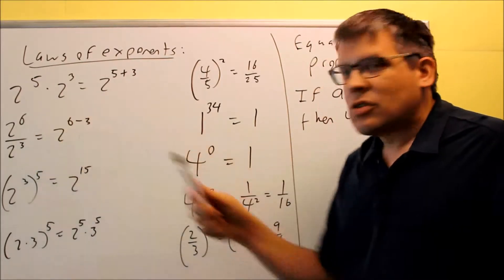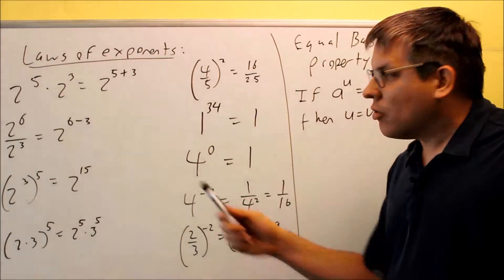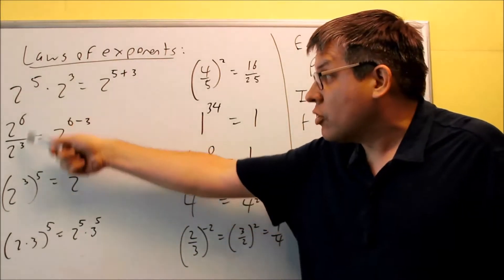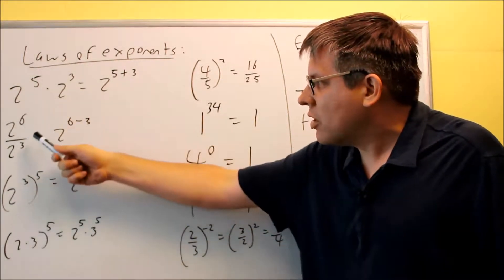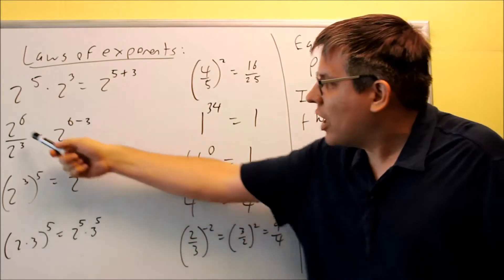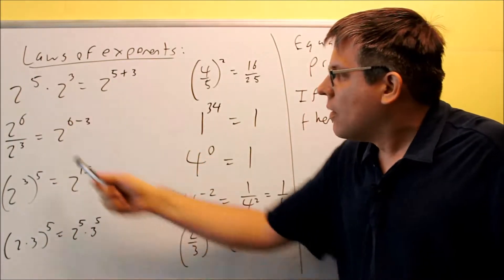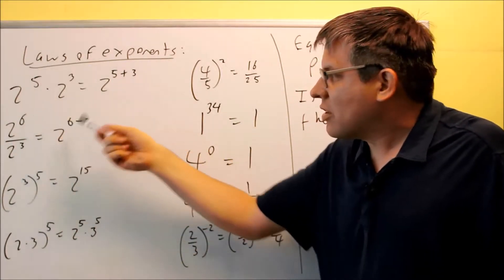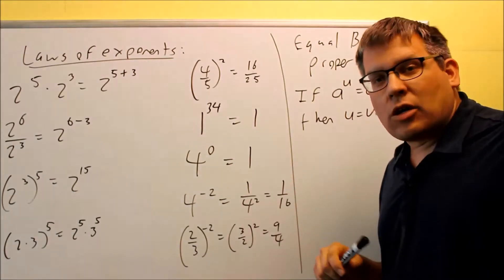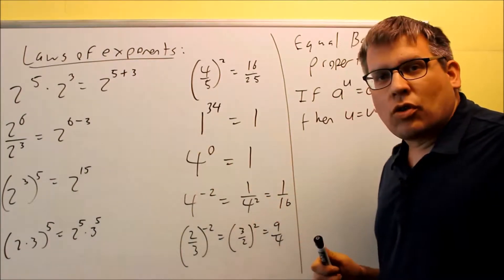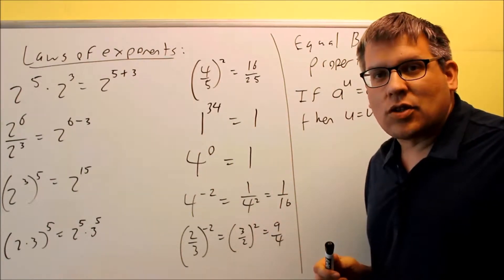The second rule says if you're dividing exponents, that means you're going to be subtracting. So if I have these, they're both going to be the same. I have my exponent, I'm always going to take the top one, subtract the bottom one, and I would get 2 to the 3rd, or 8, as the answer for that one.